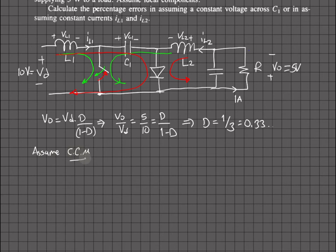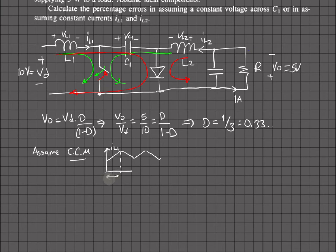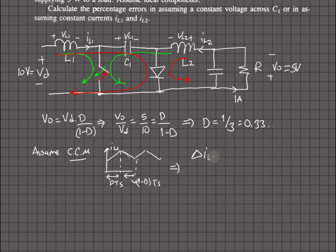Let's assume continuous conduction mode and verify it later. Going back to the inductor current waveform: during the on time, IL1 is charged by V_d for duration d·Ts, and during the off time it discharges over (1 minus d)·Ts. Let's calculate the ripple using the on period.